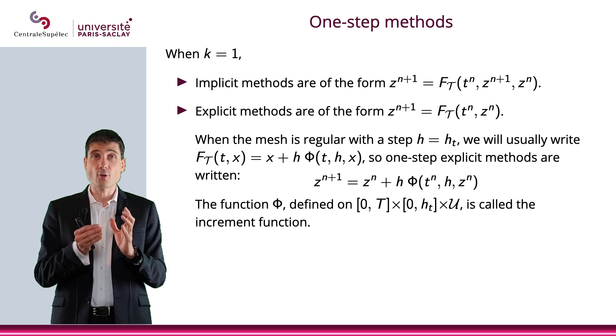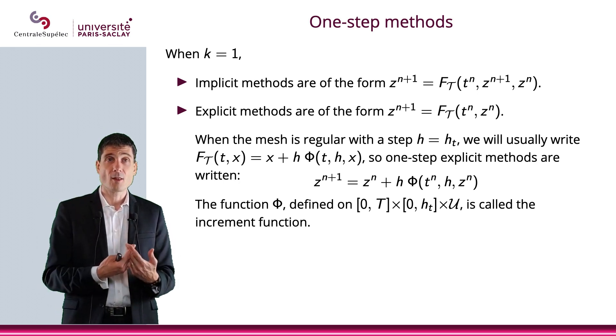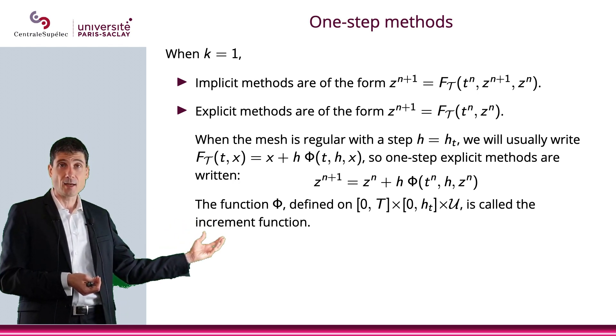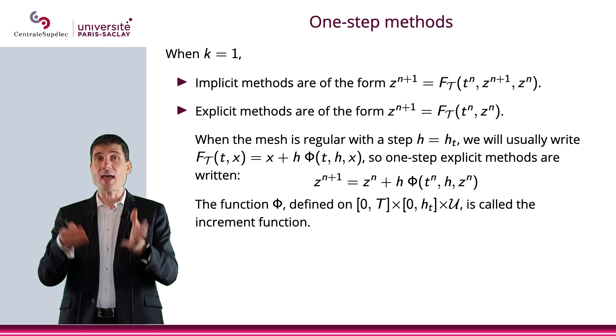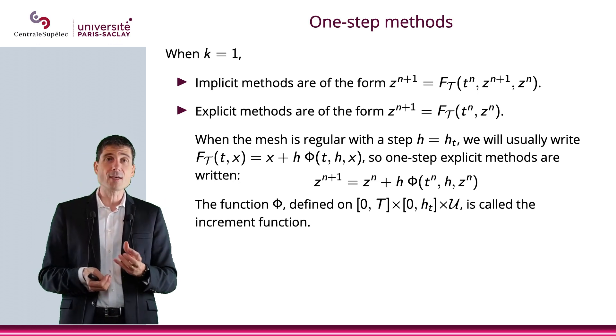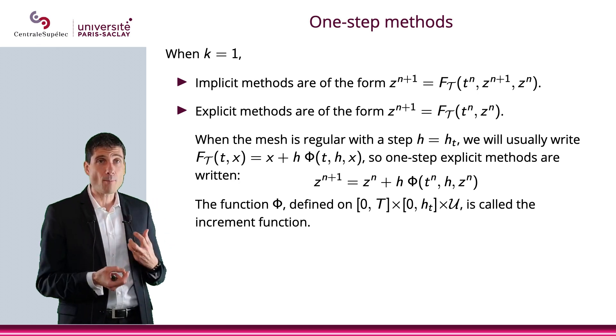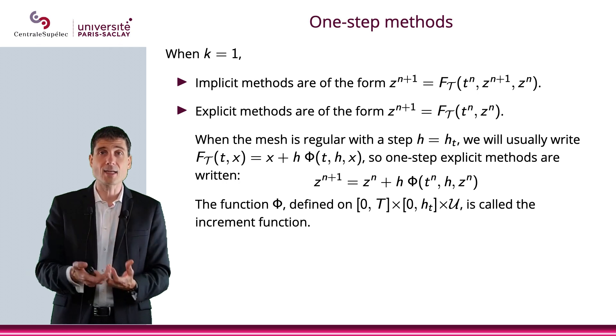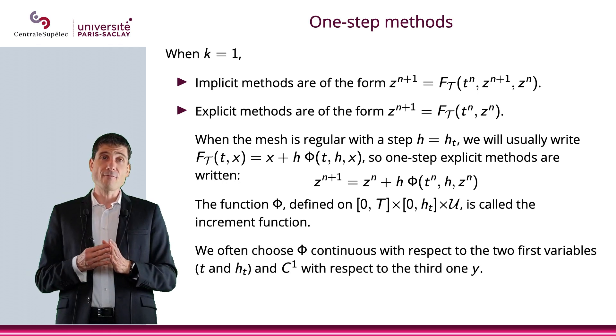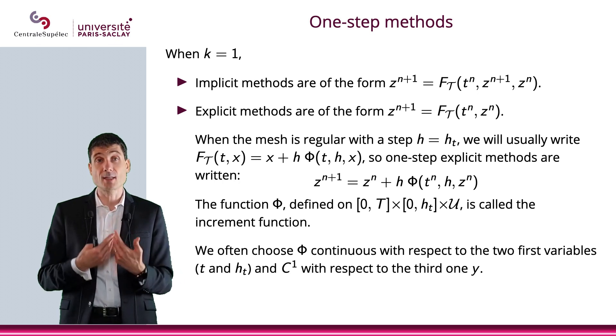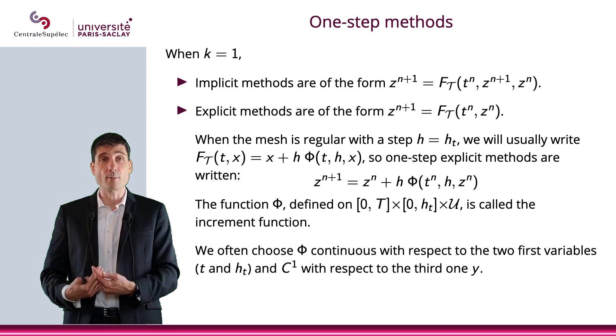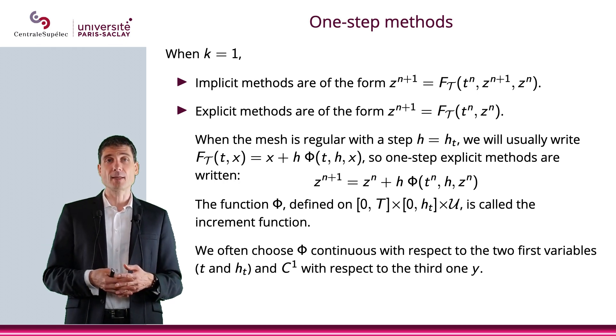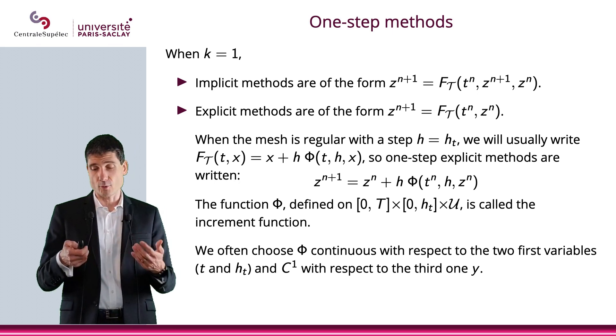The function φ is the increment function: how much do you increment z^n to find z^{n+1}? Very often, we choose φ to be continuous with respect to the first two variables, t and h, and C^1 with respect to the last variable, which is y. This function φ, defined on [0, T] × [0, h_0] × U, is called the increment function.